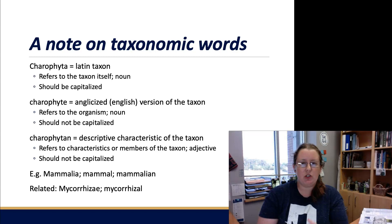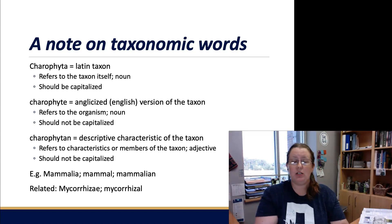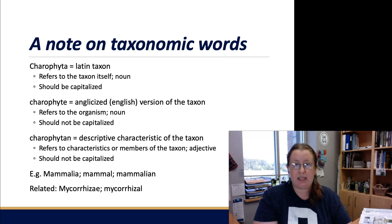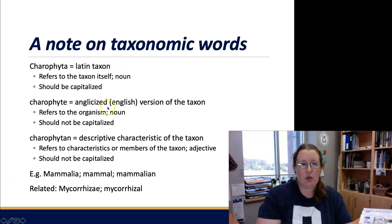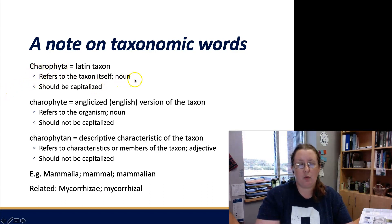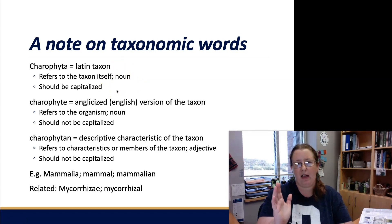There are kind of three general classes of words that we'll often use to refer to a group of organisms or a characteristic distinctive to that group. First, you have the most formal. For example, Charophyta is the Latin taxon for the group itself. This is a noun, and of course it should be capitalized — anything above the genus level is going to be capitalized.